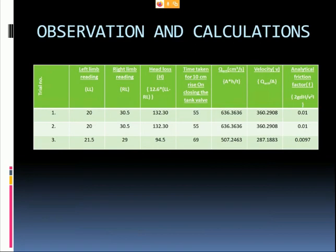For Trial 1, a pipe diameter of 15 mm is used, where the length of the pipe is 300 centimeters, the area of the collecting tank is 3500 centimeters squared, and the rise is 10 centimeters.